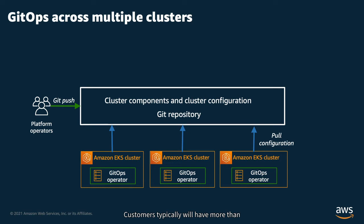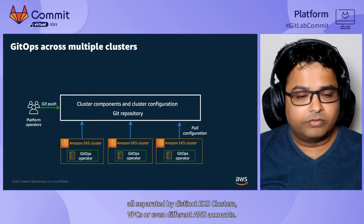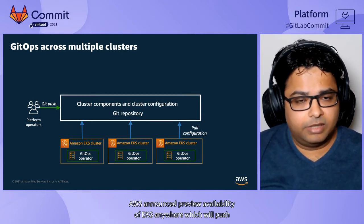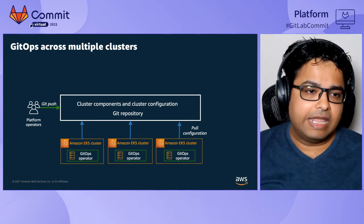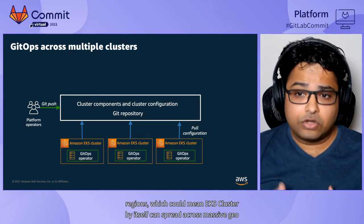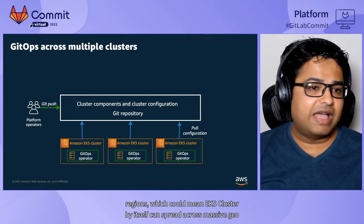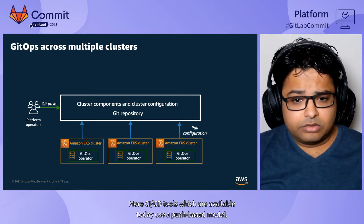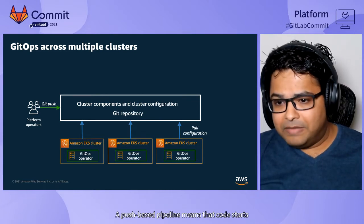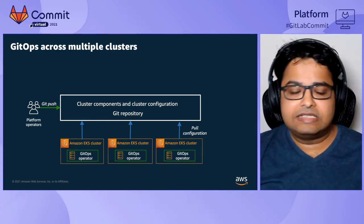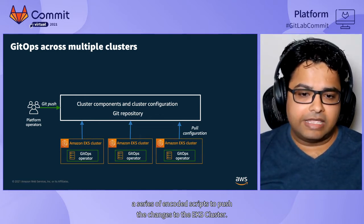Customers typically have more than one environment — for dev, test, and production purposes — all separated by distinct EKS clusters, VPCs, or even different AWS accounts. At re:Invent last year, AWS announced preview availability of EKS Anywhere, which pushes the implementation of EKS clusters beyond the boundaries of AWS accounts or regions, meaning EKS clusters can spread across massive geolocations near to the edge. Most CI/CD tools available today use a push-based model — a push-based pipeline means that code starts with the continuous integration system and then continues through a series of encoded scripts to push changes to the EKS cluster.